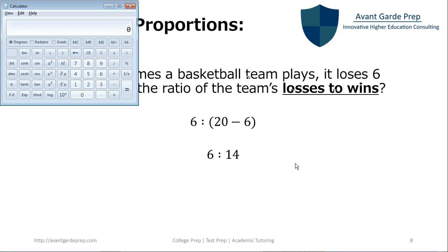So six to twenty minus six should give us the losses to wins. So we go ahead, we can get our calculator again. Subtract twenty from six. Since they play twenty games and lose six, we'll be subtracting twenty minus six. That's going to equal fourteen games. So out of every twenty games, they actually win fourteen. So the ratio is six to fourteen.